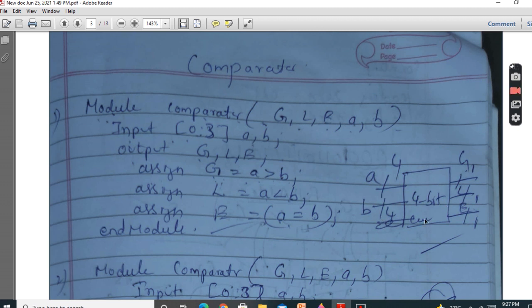So A is 4-bit and B is 4-bit. We are comparing the magnitude. Whether A is greater, you will get A is greater than B, you will get G.